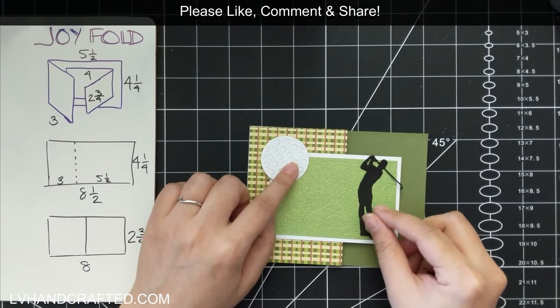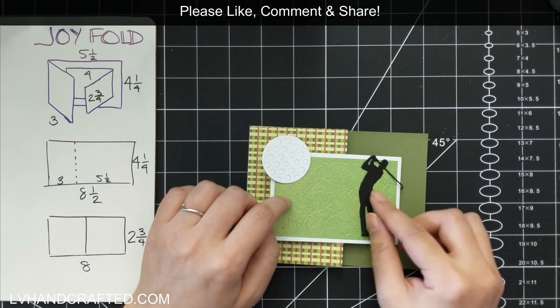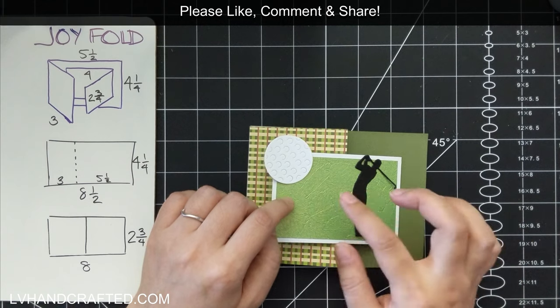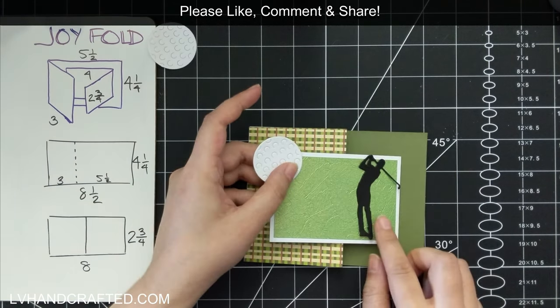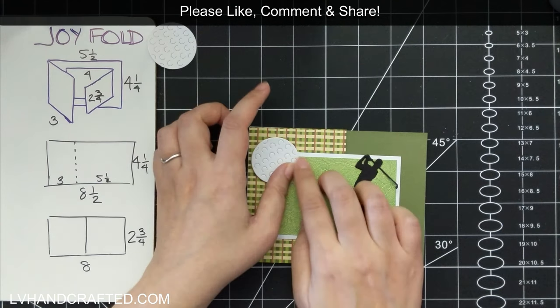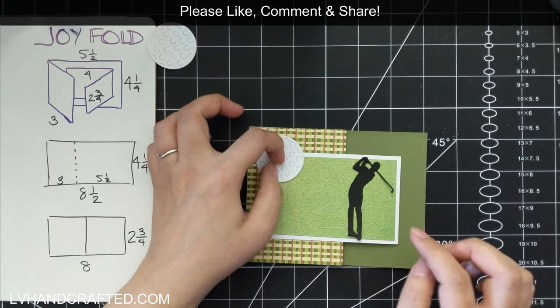And on the front of that smaller fold out piece, I did want to leave a little bit of a white border that way it stands out a little bit better against the solid color and the patterned papers that I have behind it.